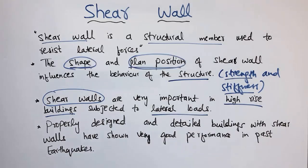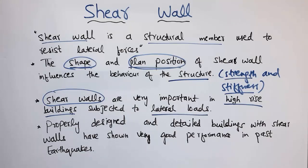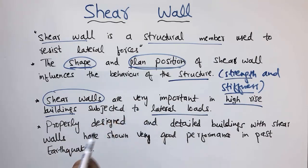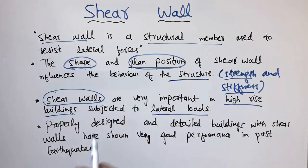Properly designed and detailed buildings with shear walls have shown very good performance in past earthquakes. It has been found from research that buildings with well-designed shear walls have always shown good performance in resisting earthquake loads and lateral forces. High-rise buildings and buildings in earthquake-prone regions should always be designed with shear walls so they perform well. The main purpose of the shear wall is to resist lateral forces, take lateral loads, and transfer them to the foundation. Thank you for watching.